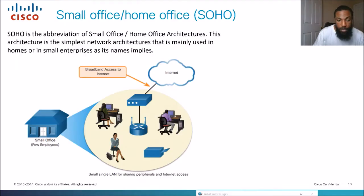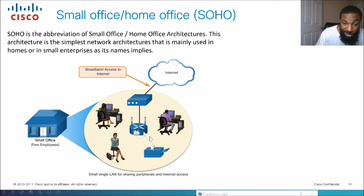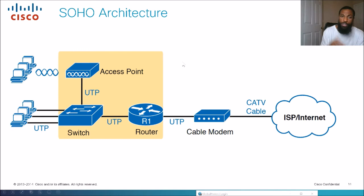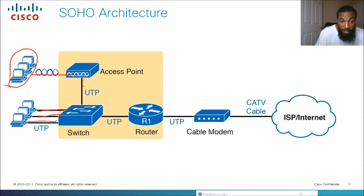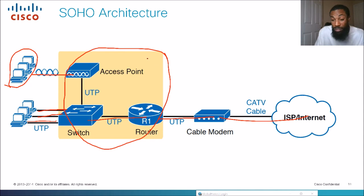Looking at a SOHO network topology, we have a Wi-Fi router connected to a modem. Wireless users and a printer connect to the Wi-Fi router, and they get to the internet through the modem. In another SOHO example, desktop PCs connect wirelessly to an access point, wired devices connect to a switch, and they all connect to a router, then to a modem for internet access. ISPs like Spectrum or Comcast often lump all those devices into one unit.